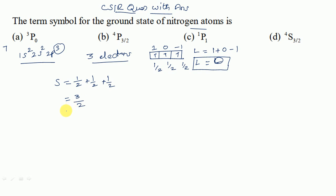So the formula is, the term symbol formula is 2S+1, L subscript J. This is the formula of term symbol. So we already calculated S as 3/2 and L as 0.